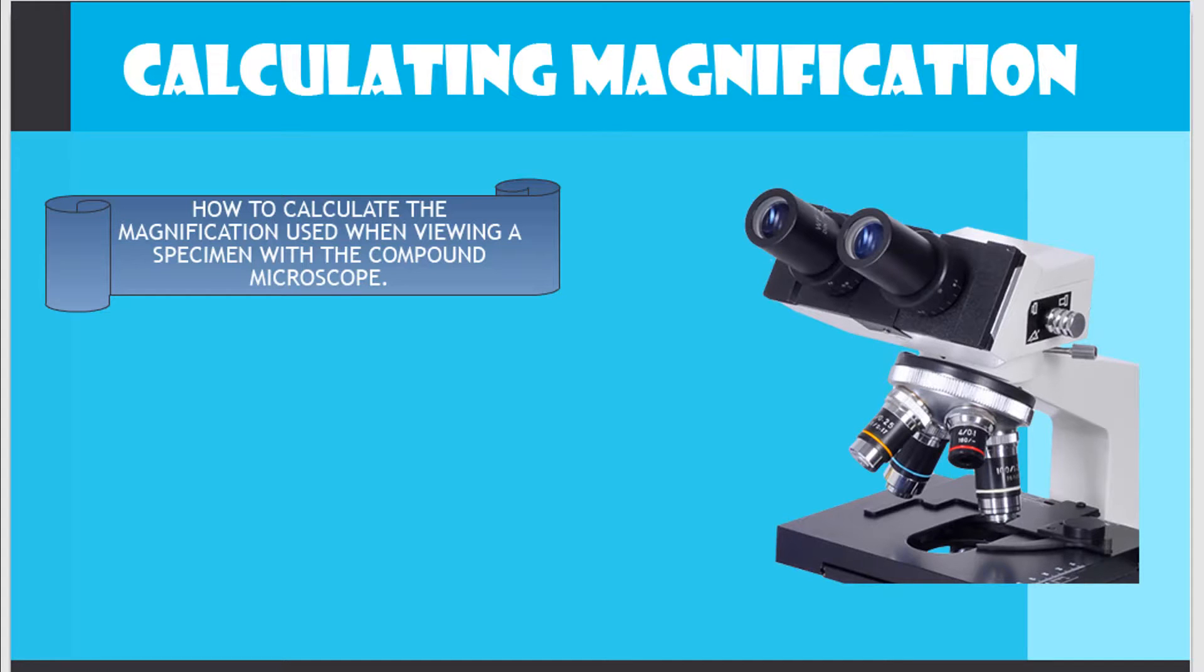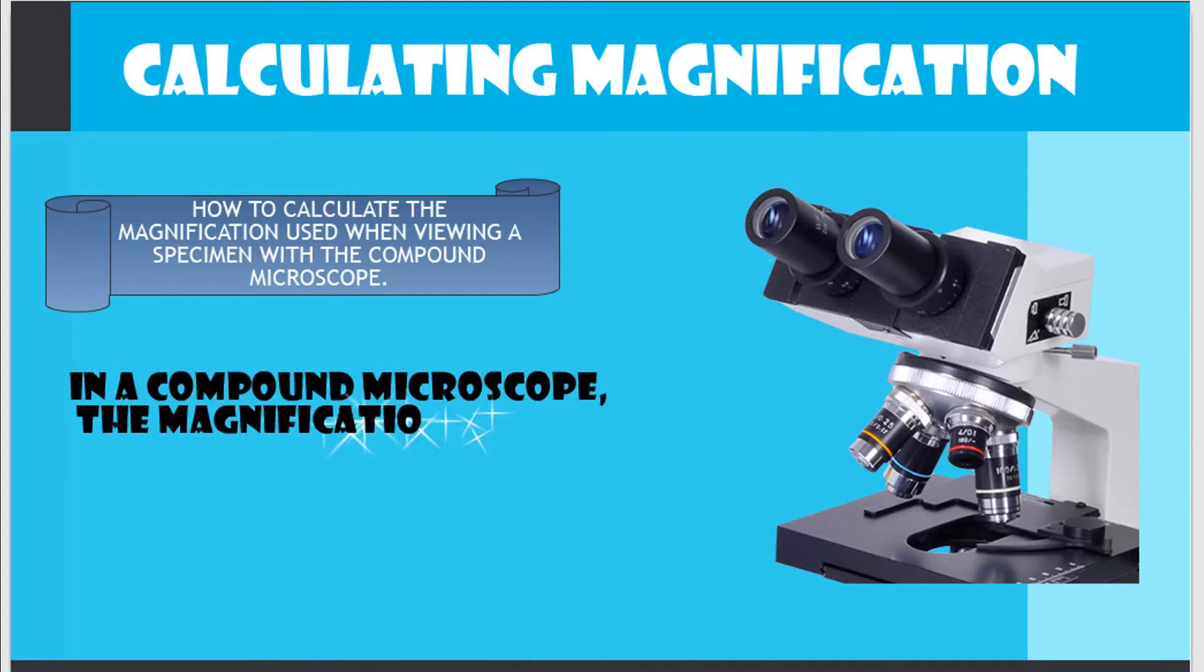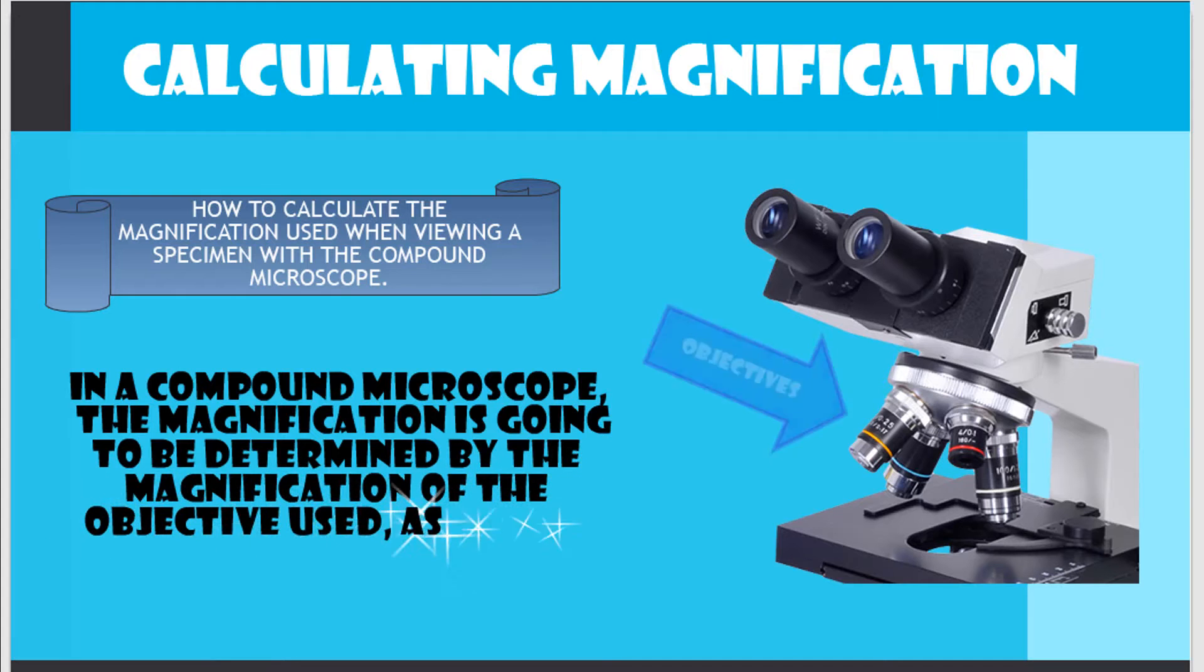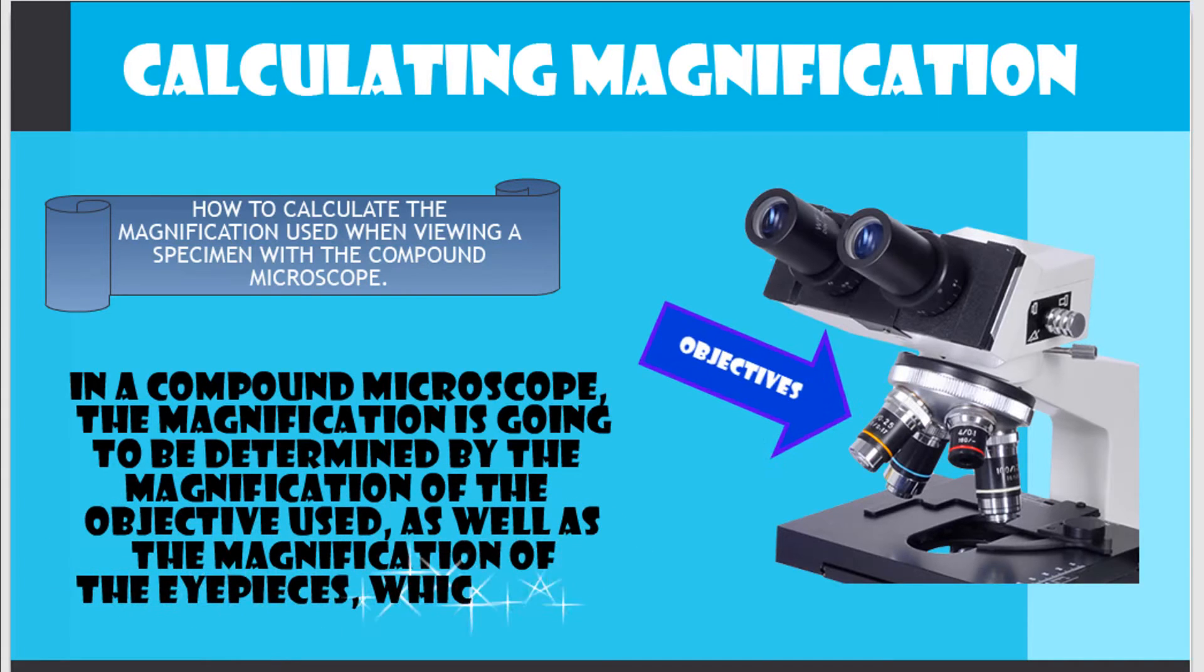In a compound microscope, the magnification is going to be determined by the magnification of the objective used, as well as the magnification of the eyepieces, which are 10x.